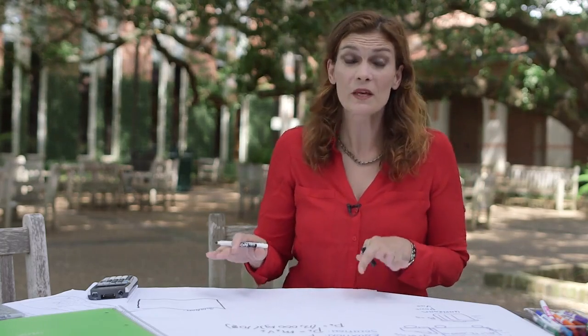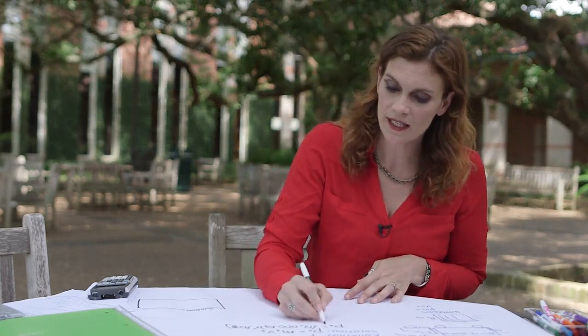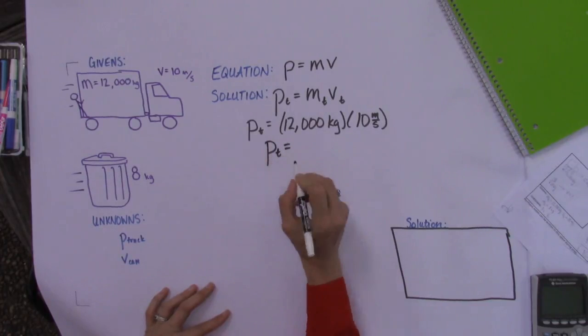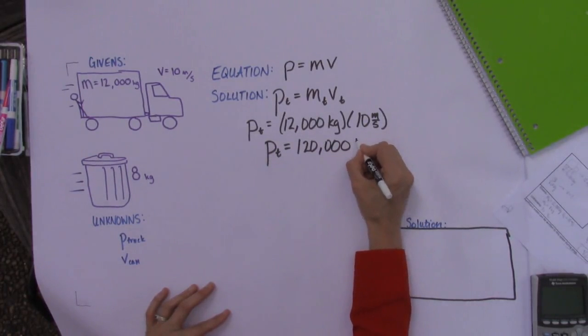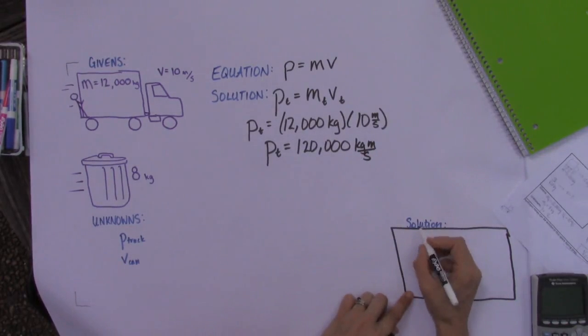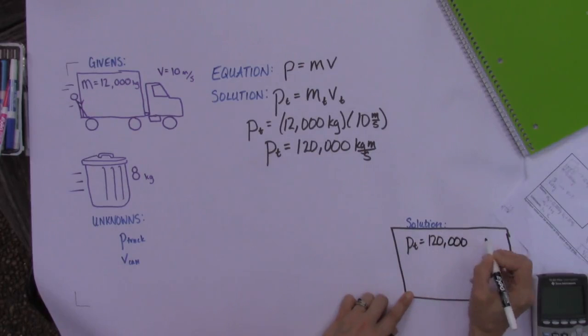Momentum doesn't have its own unit. We just call them kilogram meters per second. So the momentum of the truck, if you need a calculator I respect that, is 12,000 kilogram meters per second. We write that in our solution box. I think I said 12 but it's 120,000 kilogram meters per second.